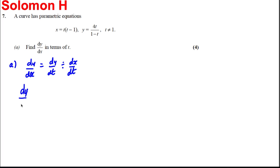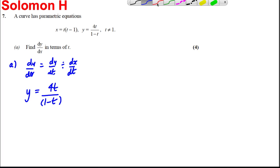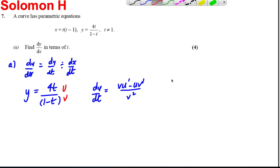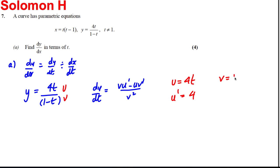Now dy by dt — to work that out, y is 4t over 1 subtract t. I'm going to have to use the quotient rule here because we've got a division. So my u is 4t, my u dashed is 4, and my v is 1 subtract t, so my v dashed is negative 1.